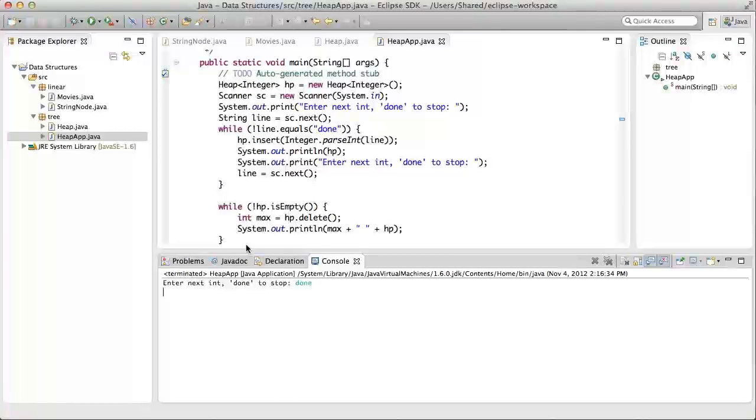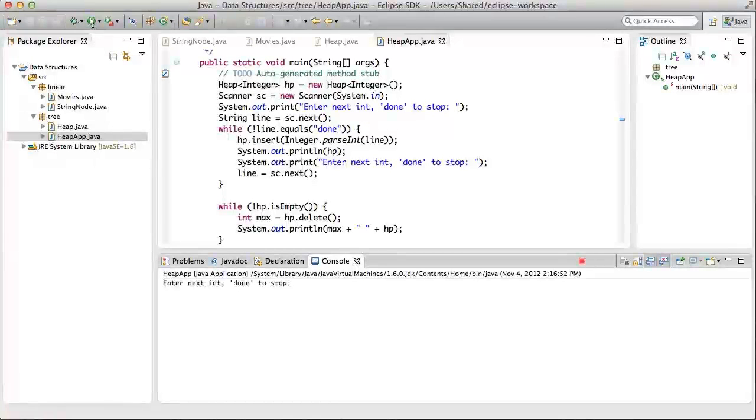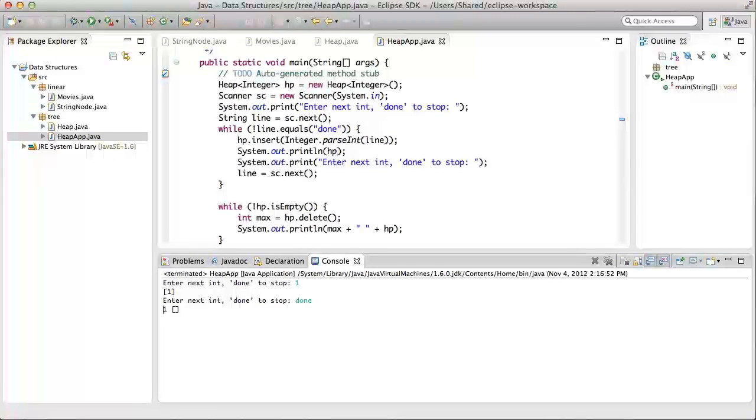Let's run it again. And this time with a single integer input, say one. And then let's type done. Notice that the heap was printed with one in it. And then after done was entered, it deleted the one, which left an empty heap. And that was the end of the application.